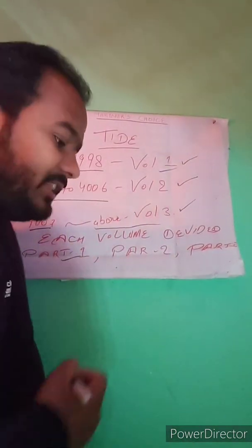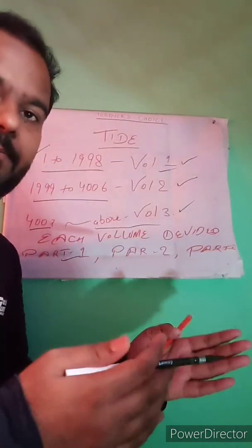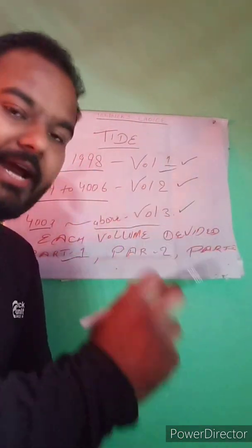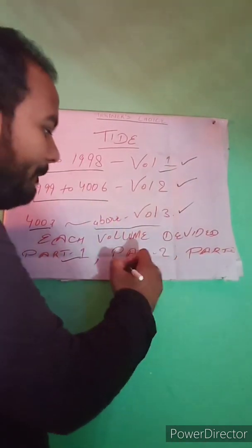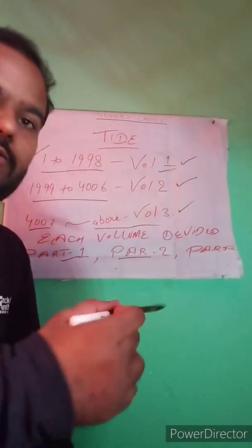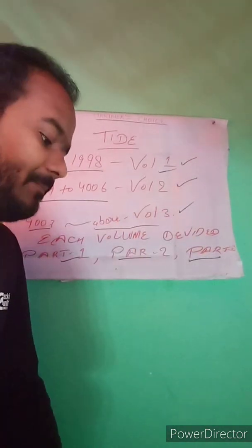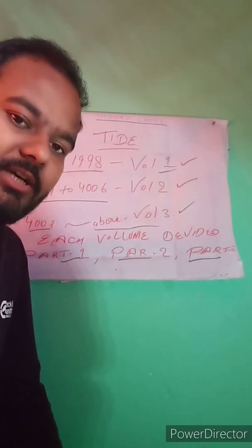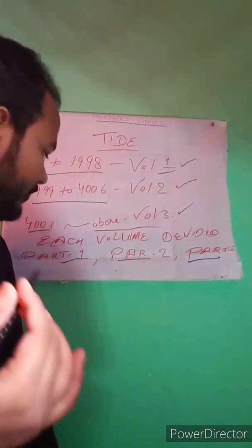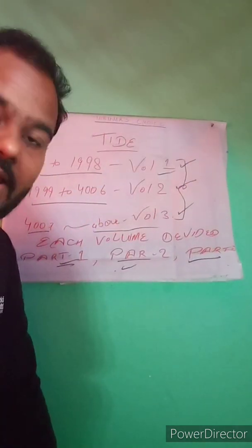Each volume is divided into three parts. Part 1 deals with tidal prediction for standard ports — for every day the high and low water tidal predictions are given, such as 0100 hours high water at a certain time. Part 2 is about secondary ports — secondary port data with reference to the standard ports, giving the time difference and high water/low water height difference. Part 3 contains harmonic constants, which we do not need to study as they are not used in the exam.